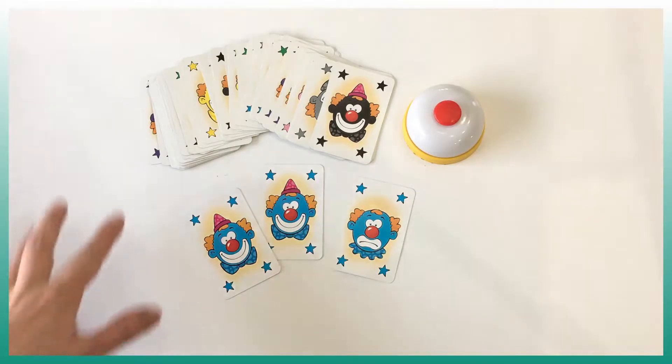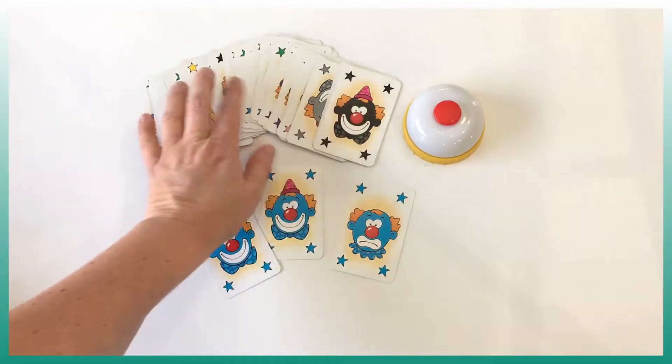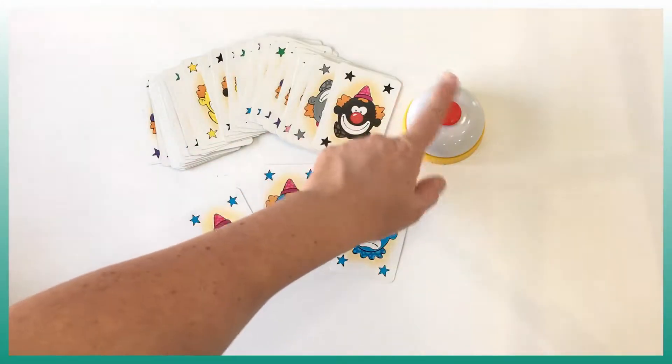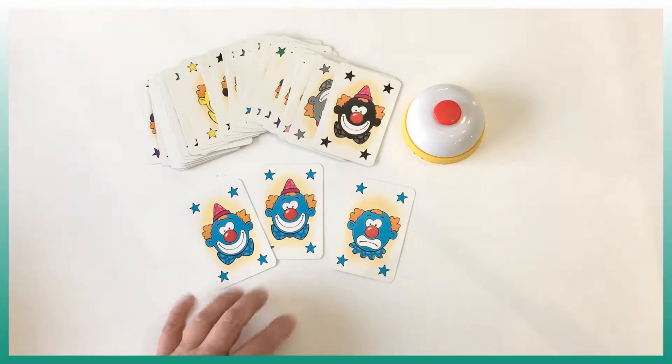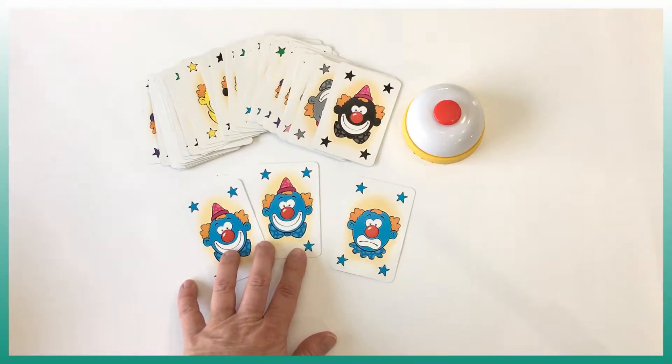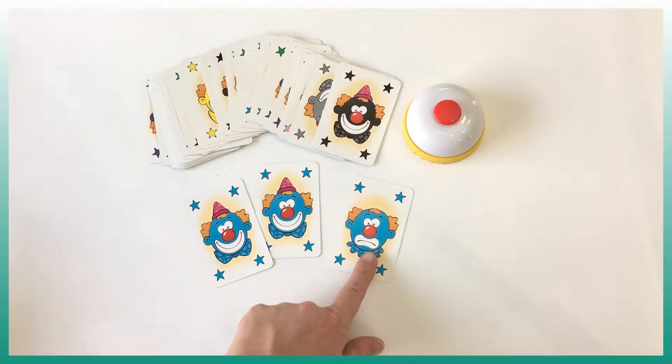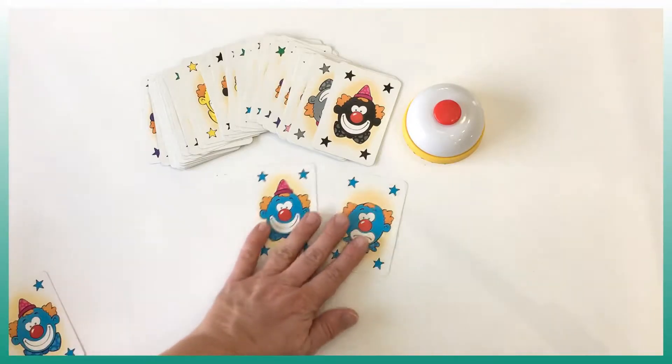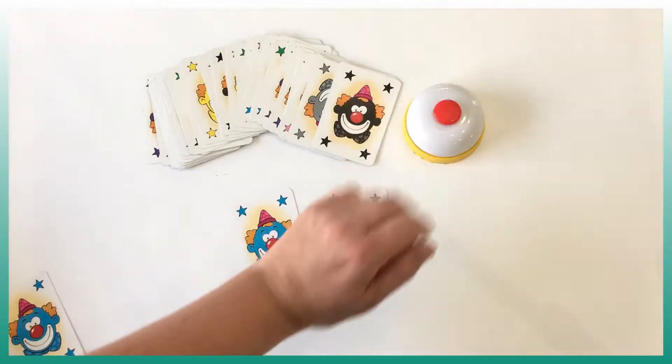So the game Halligalli Jr. comes with multiple cards, clown cards of different colors, and a bell. And what we need to do is we need to ring the bell every time we see a clown of the same color. However, if we see a clown with a sad face and no hat, even if it's a blue clown, we cannot ring the bell.